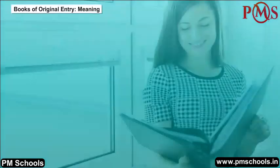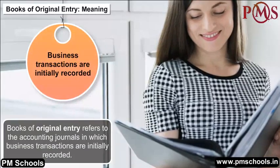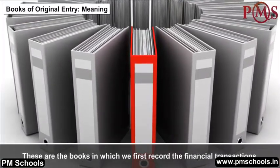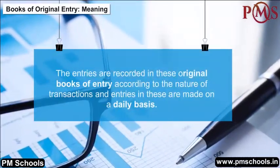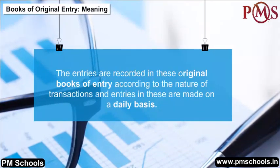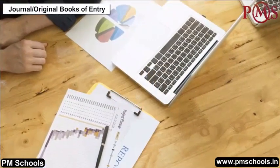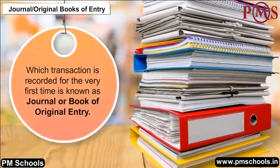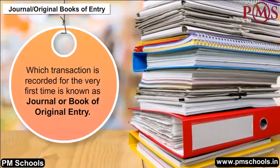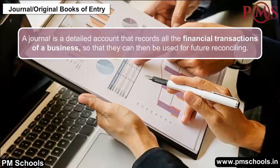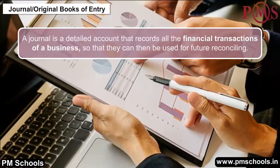Books of Original Entry: Entries are recorded in these original books of entry according to the nature of transactions, and entries are made on a daily basis. In the real world, transactions are not recorded directly in the accounts. The book in which a transaction is recorded for the first time is known as the Journal or Book of Original Entry. A journal is a detailed account that records all the financial transactions of a business for future reconciling.